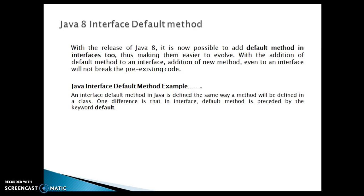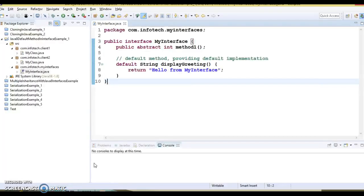An interface default method in Java is defined the same way a method is defined in a class. One difference is that in an interface, the default method is preceded by the keyword 'default'. Let's try to understand how we can define a default method in an interface.